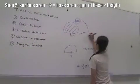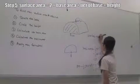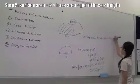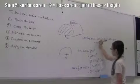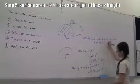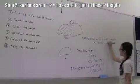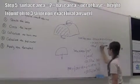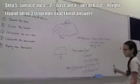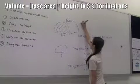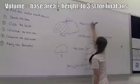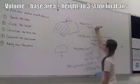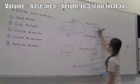To find the surface area, we take 2 times the base area plus the perimeter of the base times the height of the solid, where the height is 6 cm. This equals 174 cm squared. From this work, we can easily find the volume. Volume equals base area times height: 25.123 times 6, which gives 151 cm cubed.